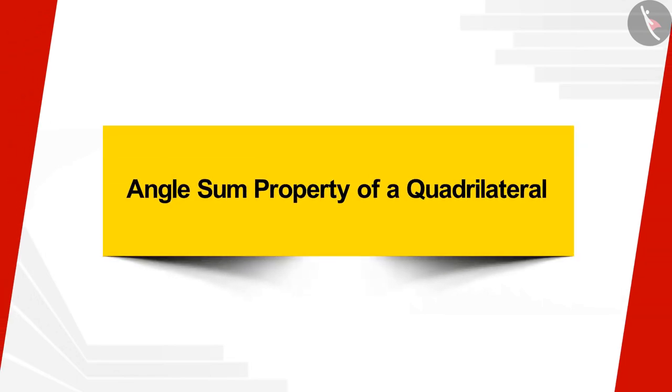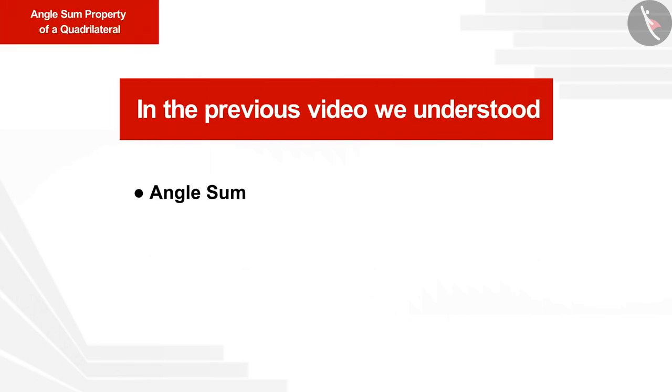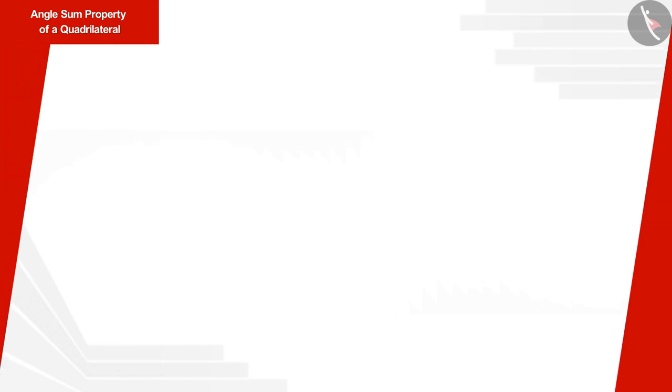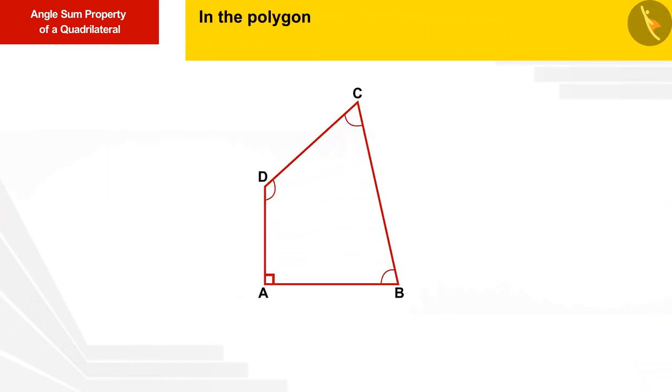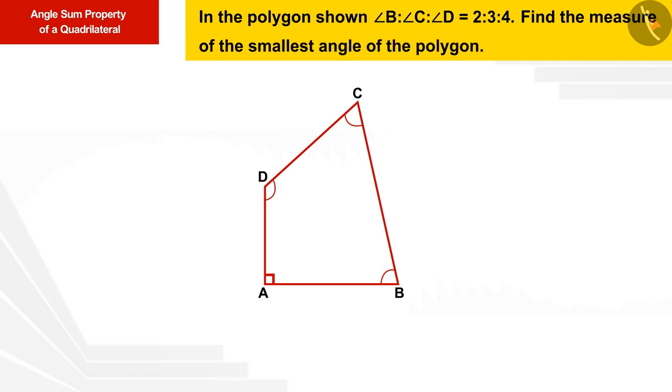Welcome all of you to this video. In the previous video we understood the angle sum property of the quadrilateral. Today we will see an example based on this. In the polygon shown, the ratio in the angles B:C:D is 2:3:4.